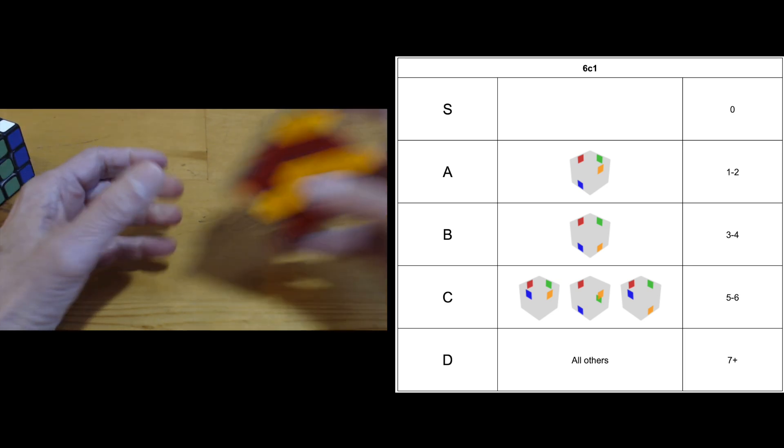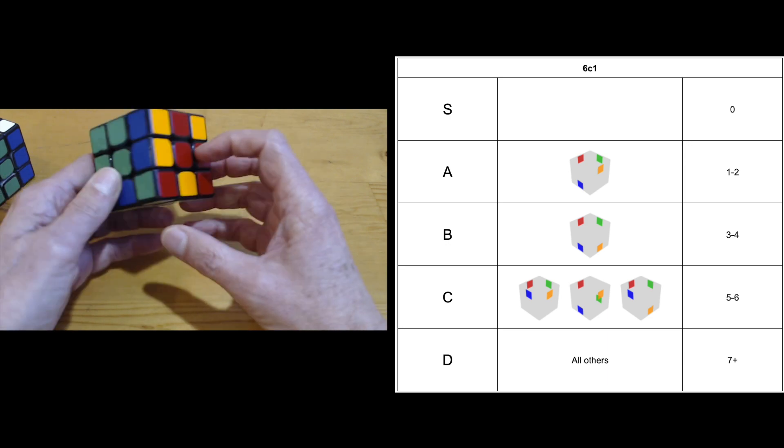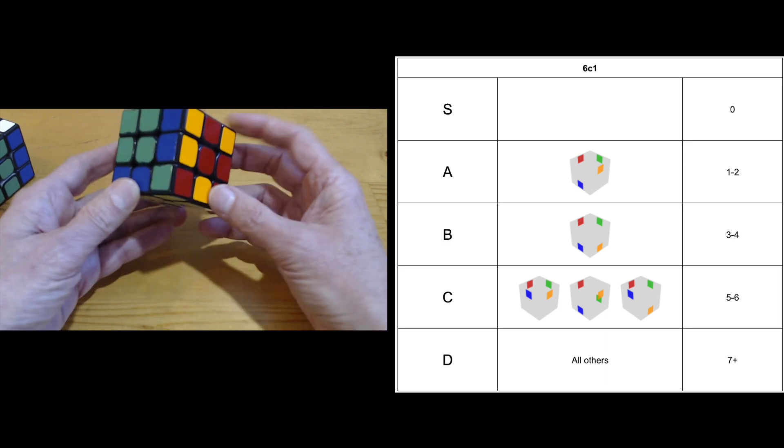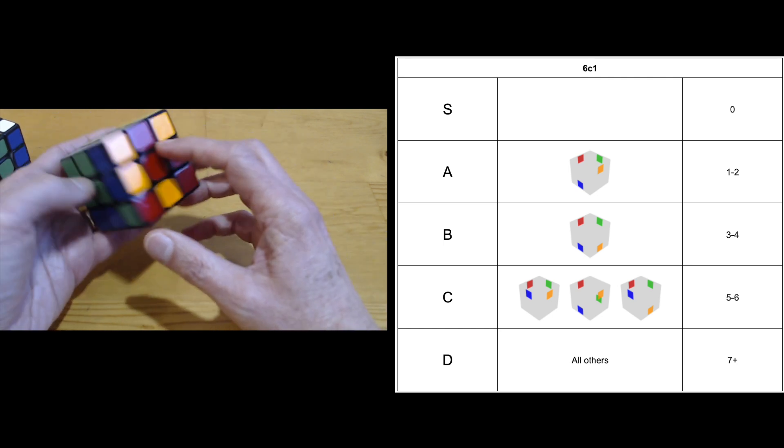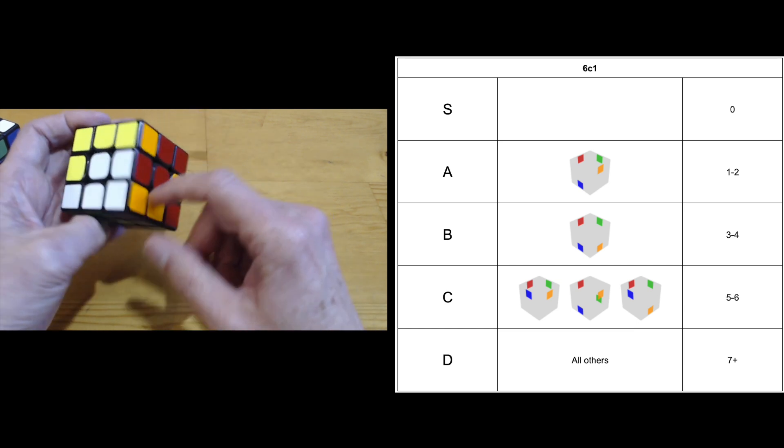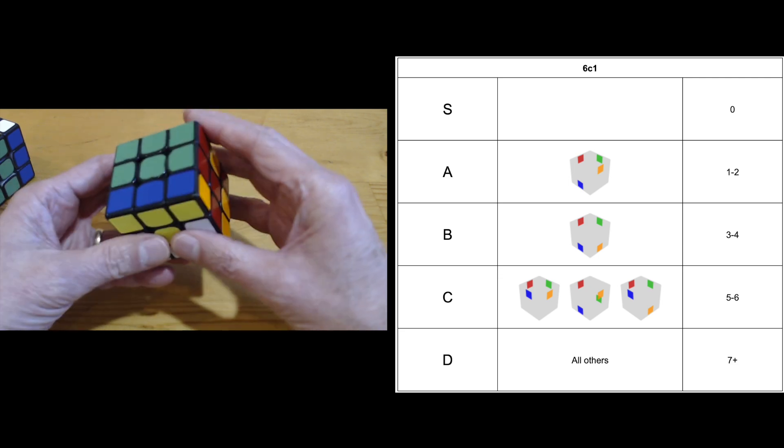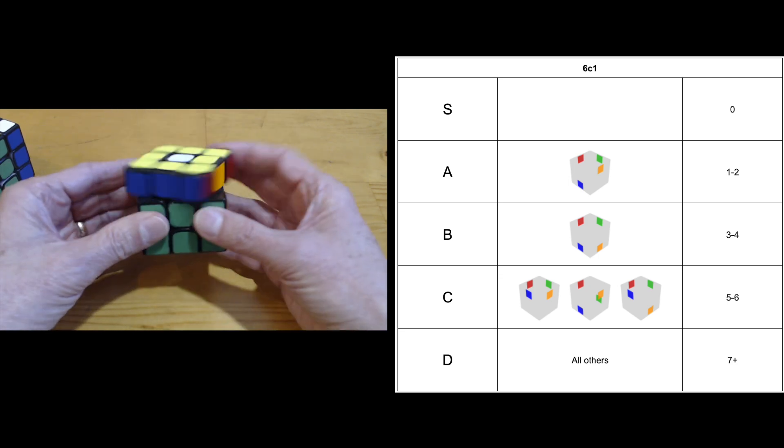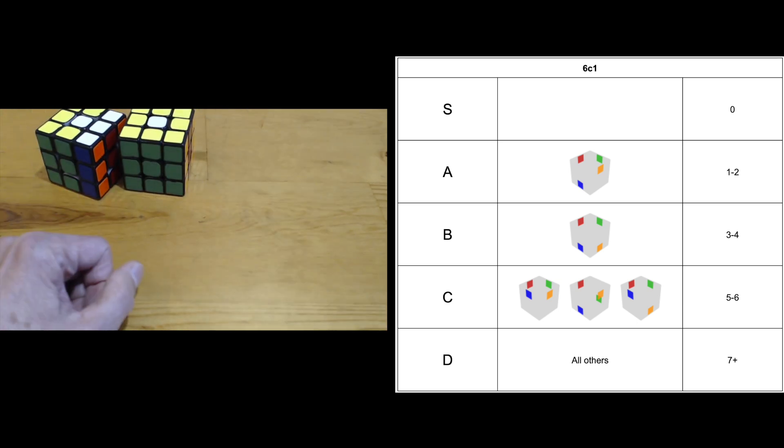And then the other good case, best case, is this case where I have two bad edges. They're both in a diagonal. And so then I just need to bring them both up while setting up the corners, which I do with a corner swap by inserting the R2 before the F2. So R2, F2 sets up the corners and solves the floppy.